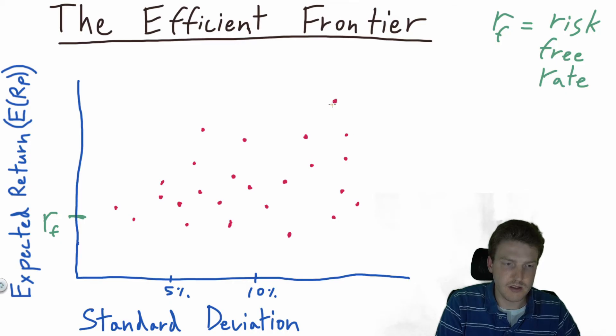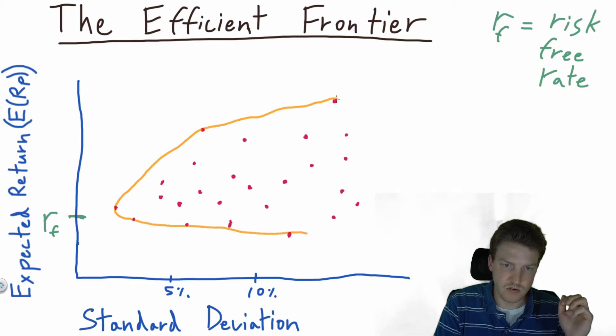Up here, this is the highest expected return portfolio, but it also has the highest expected standard deviation. But then we see that there's another portfolio right here that has a high expected return relative to standard deviation. Then we intercept here, and this creates the efficient frontier.